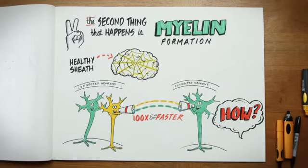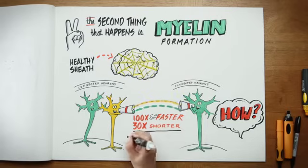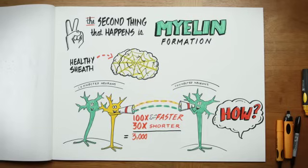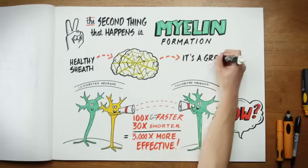And after it fires off, it's 30 times shorter, the resting period that happens. 30 times 100 is 3,000. So when you've put down myelin, you've made your neurons communicate 3,000 times more effectively. That's a great thing.